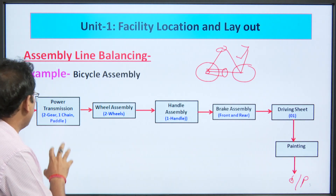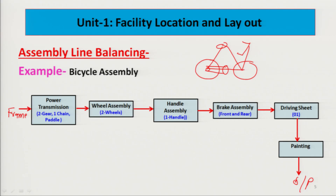Now consider timing data: work station one takes 3 minutes (two gears, one chain, one pedal), work station two takes 2 minutes (wheel assembly), work station three takes 4 minutes (handle assembly), work station four takes 2 minutes (brake assembly), driving seat takes 1 minute, and painting shop takes 3 minutes. Based on this data, some problems become visible in the assembly line.